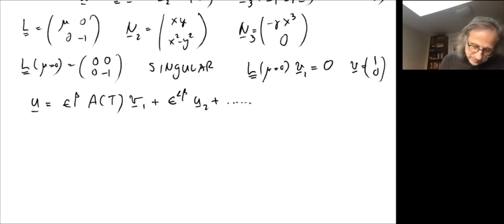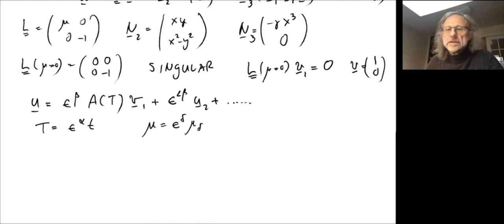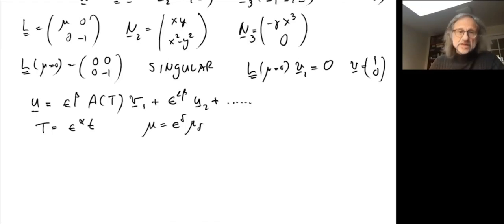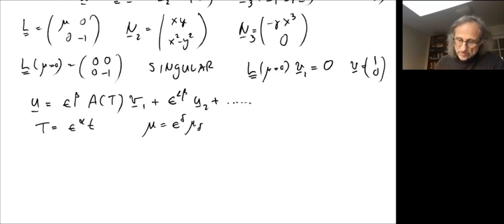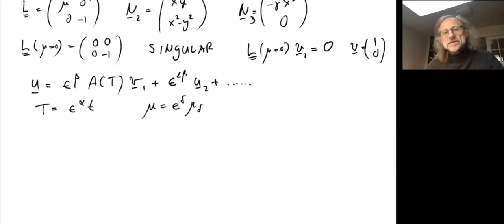We need to introduce a slow time, epsilon to the alpha times t, and expand our control parameter mu as epsilon to the delta times mu_delta, just to have a ladder to work with. How do you choose these scale links? This is kind of a guessing game, but you can do educated guesses. It's all determined by the form of the equation of the dynamics on the center manifold.